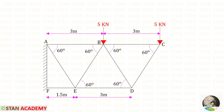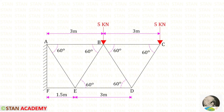Now let us take joint E. At this joint we have the member forces in EF, ED, EB, and EA. We know that this angle will be 60 degrees, this angle will be 30 degrees, and this angle will also be 30 degrees.